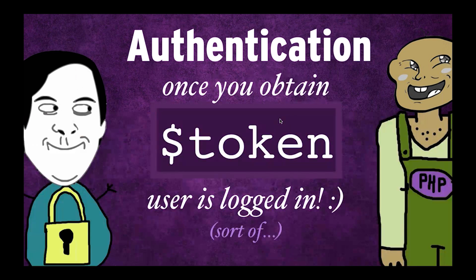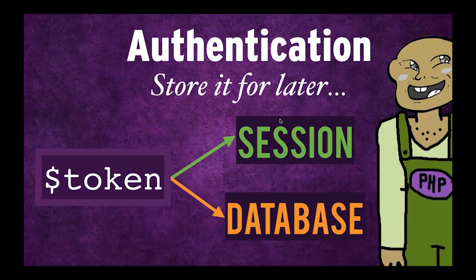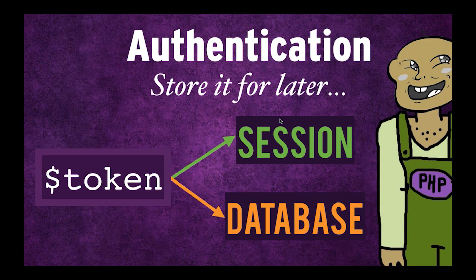So now that you have an access token, the user's logged in — you've authenticated the app. What do you do with it? I recommend throwing it in a session, and then every time they come back to the website, just grab a new access token and throw it in a session again. It's very rare that you would need to throw it in a database unless you're making requests on behalf of the user at, like, 3 in the morning with a cron job or something.